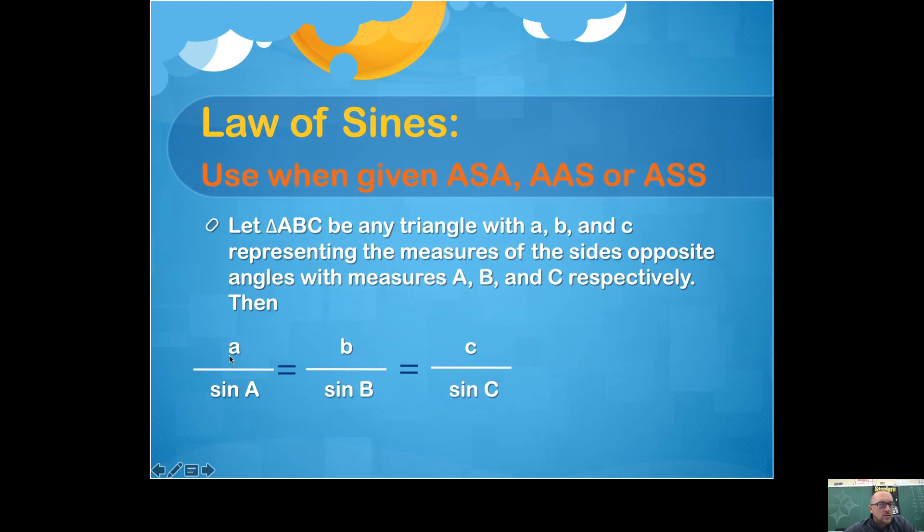If you have a side length, that side length divided by the sine of the angle opposite it is going to equal another side length divided by the sine of the angle opposite of it. So if you don't know one of these four things, you can cross-multiply and find those things.